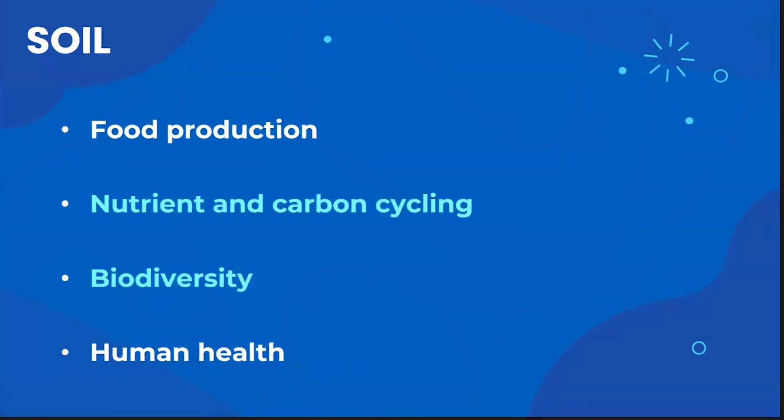Pollution can affect soil in different ways. It can make food production more difficult, disrupt natural cycles of nutrient and carbon cycling, inhibit biodiversity, and negatively affect human health. Pollutants in the soil can harm every single part of the human body — everything from the brain to the reproductive system — so it's pretty serious when we have pollutants in the soil.